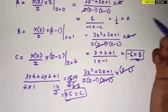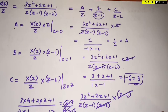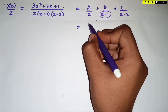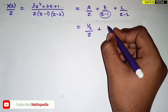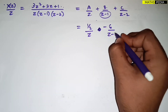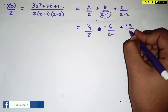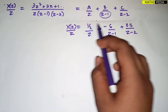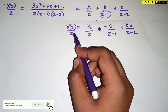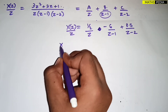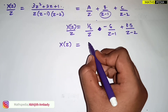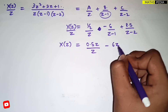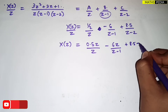After partial fraction decomposition, we get the values: A = 1/2, B = −6, and C = 8.5. Substituting these back, X(z)/z = (1/2)/z + (−6)/(z − 1) + 8.5/(z − 2). So X(z)/z = 0.5/z − 6/(z − 1) + 8.5/(z − 2).